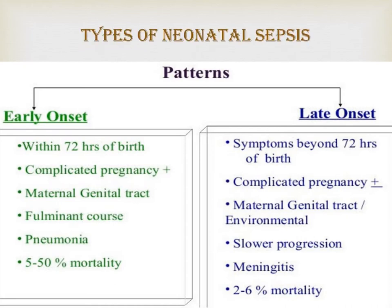Neonatal sepsis is classified into early onset and late onset. Early onset sepsis is generally caused by transmission of pathogens from the female genitourinary system to the newborn or fetus. These pathogens can ascend through the vagina, cervix, and uterus, and can also infect the amniotic fluid. Neonates can also become infected during delivery as they pass through the vaginal canal. Typical bacterial pathogens include group B streptococcus, E. coli, coagulase-negative staph, Listeria monocytogenes, and other rare causes.